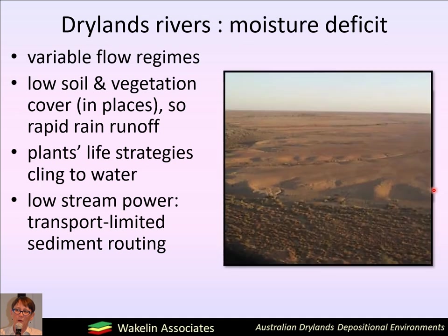Drylands have low soil and vegetation cover in many places, such as here in the gibber plain of the Neils catchment on the west side of the Lake Eyre basin. So when rain does fall, you can get quite rapid rain runoff and that has important consequences for how the rivers behave. The plant life strategies cling to water-retaining landforms. This is the macro channel of the Neils River and you can see it's full of trees. This has important consequences for sediment deposition patterns, bioengineering, and the distribution of erosion across a river system.